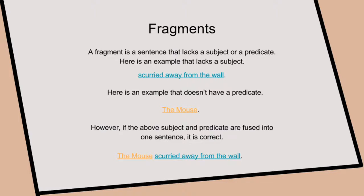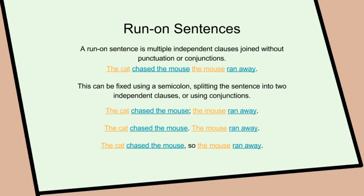A quick recap: orange text indicates a subject and blue text indicates a predicate. Fragments — a fragment is a sentence that lacks a subject or a predicate. Here is an example that lacks a subject: 'scurried away from the wall.' Here is an example that doesn't have a predicate: 'the mouse.' However, if the subject and predicate are fused into one sentence, it is correct: 'the mouse scurried away from the wall.'